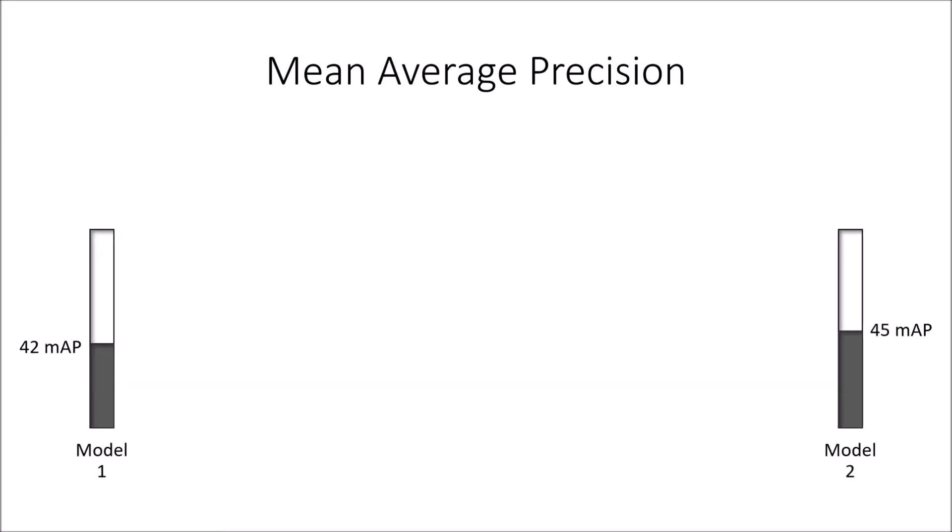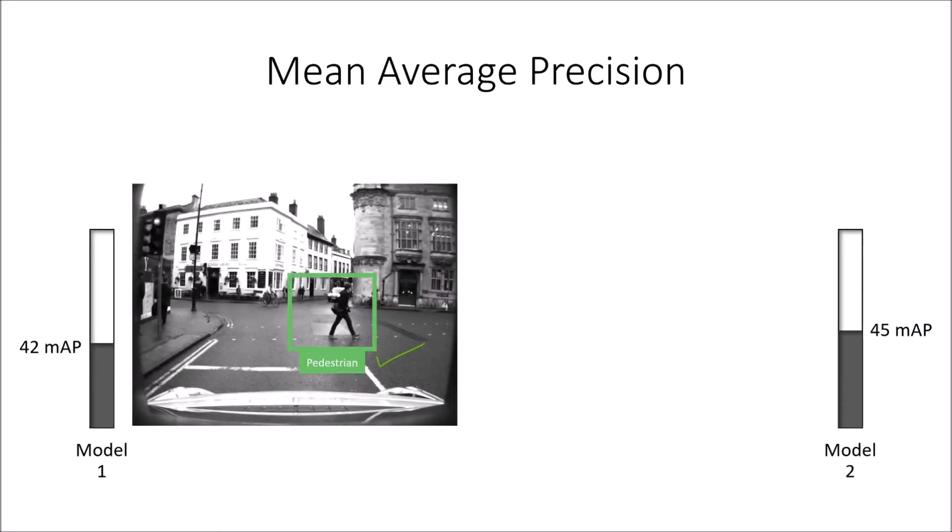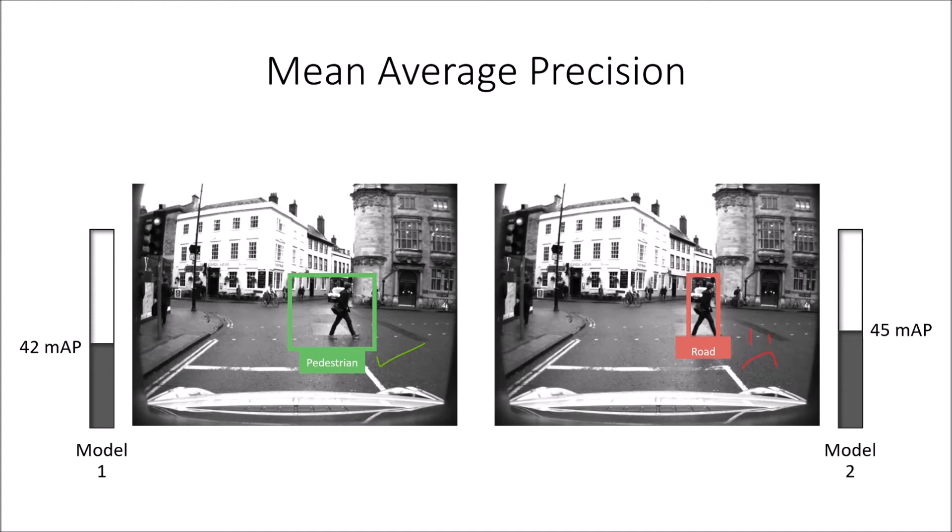For instance, for self-driving cars, we really care mostly about the existence of a pedestrian on the road, and of course localization is acceptable. What we don't want to happen is that a pedestrian gets missed by the detector or classified as the road. So in this situation, we care more about the recall and correct classification than we do about precise localization.